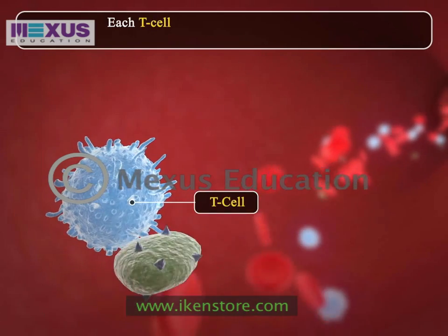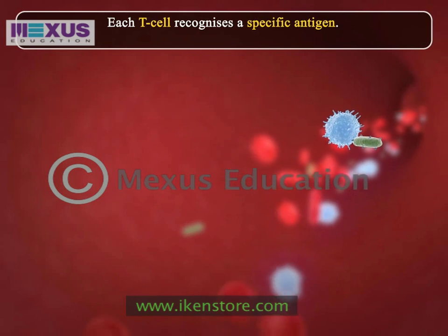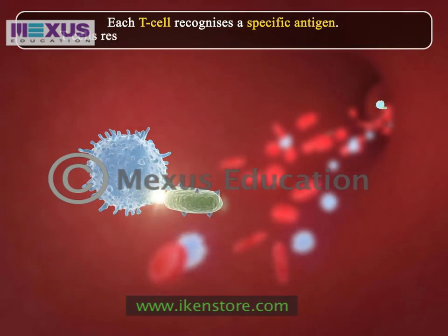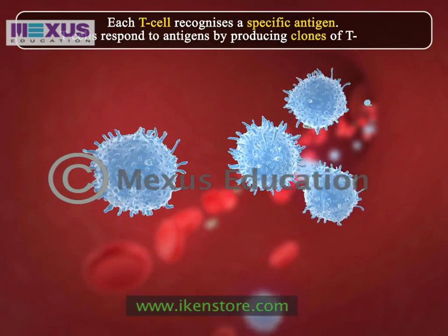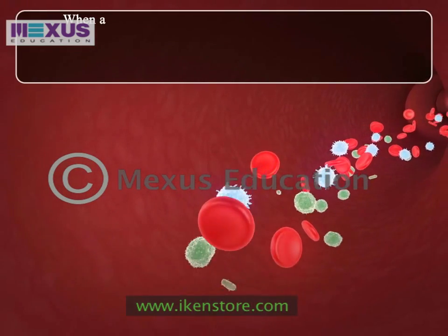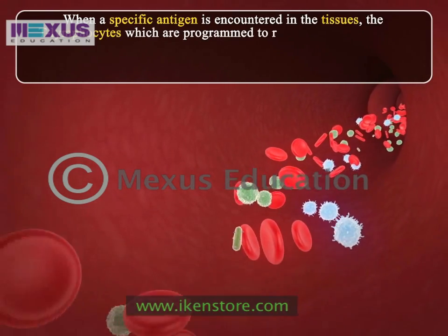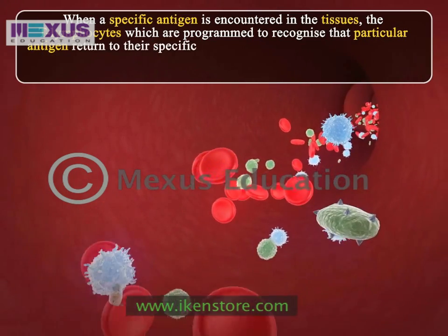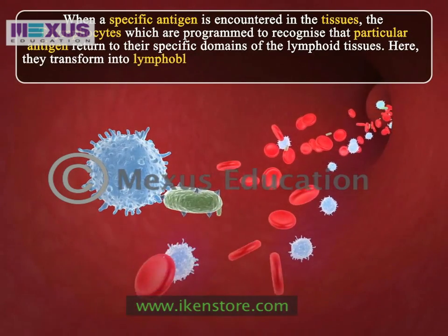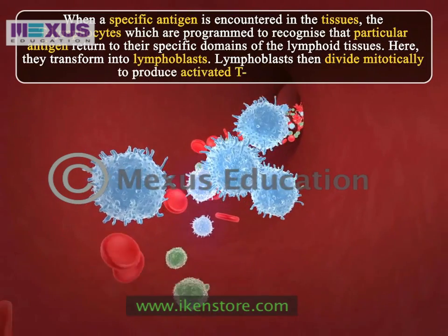Each T cell recognizes a specific antigen, hence we find different T cells in the body for every antigen encountered. T cells respond to antigens by producing clones of T cells. When the specific antigen is encountered in the tissues, the T lymphocytes programmed to recognize that antigen return to specific domains of the lymphoid tissues, where they transform into lymphoblasts. Lymphoblasts then divide mitotically to produce activated T cells.